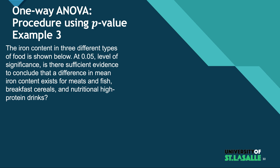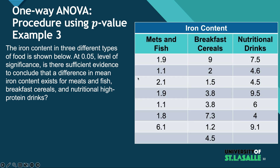We now come to our last and final example for the one-way analysis of variance or one-way ANOVA. This is Example 3, where we'll follow the procedure using the p-value approach. The iron content in three different types of food is shown. At the 0.05 level of significance, is there sufficient evidence to conclude that a difference in mean iron content exists? We're going to check if there's a significant difference.